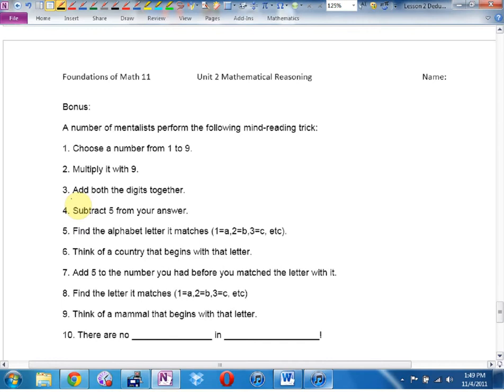Find the alphabet letter that matches your numbers. So if you have a 1, that would be an A. If you have a 2, that would be a B. If you have a C, that would be a 3. That would be a C, etc. Think of a country that begins with that letter. Remember that. Add 5 to the number that's on your calculator. The number that you had before you matched a letter to it. And once you've added 5, find the letter that it matches. Again, A being 1, B being 2, C being 3, etc.